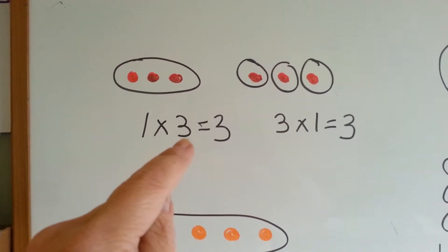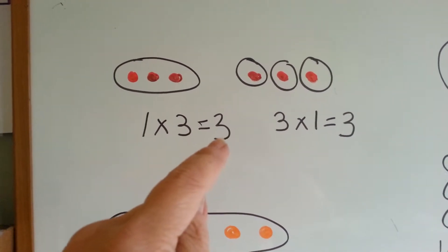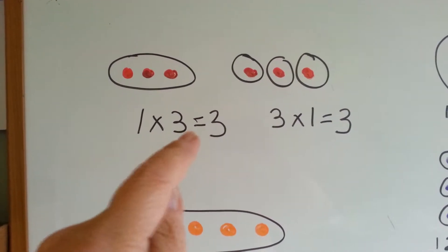So any number, like three, when it's multiplied by one, keeps who it is. It keeps its identity. It stays that number. It stays three.